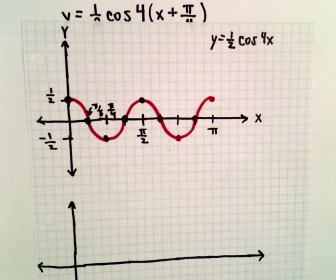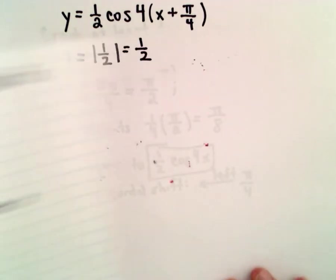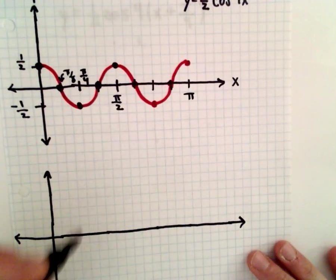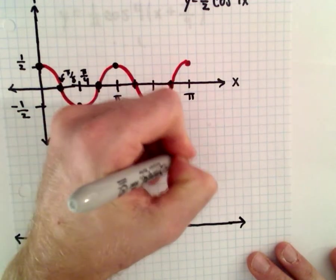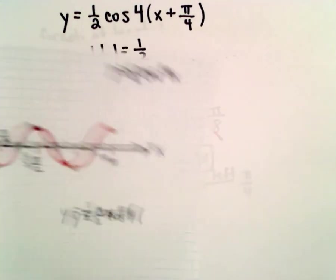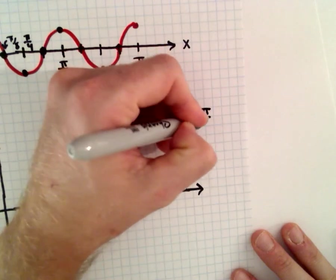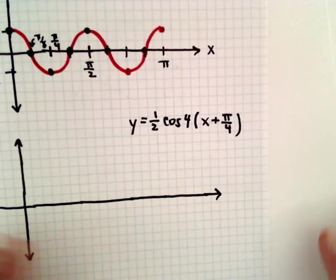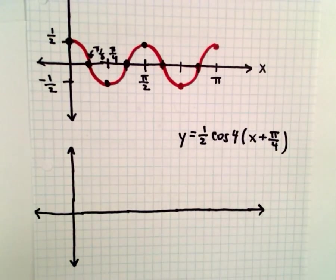Okay, so again, you know, to do this by hand, the tedious part is just coming up with the new coordinates. So now let's graph y equals one-half cosine of four times, we said four times x plus pi over four. So what we're going to do is just move everything to the left, pi over four units.